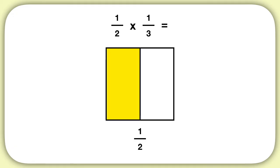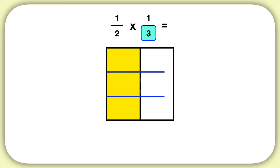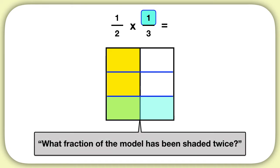Then to multiply it by one-third, we'll first focus on breaking this into thirds. I could break up this model into three equal sections. Now I'm multiplying this by one-third, so I'm going to shade in just one of these sections. Now I ask myself, what fraction of the model has been shaded twice? This will be my answer.